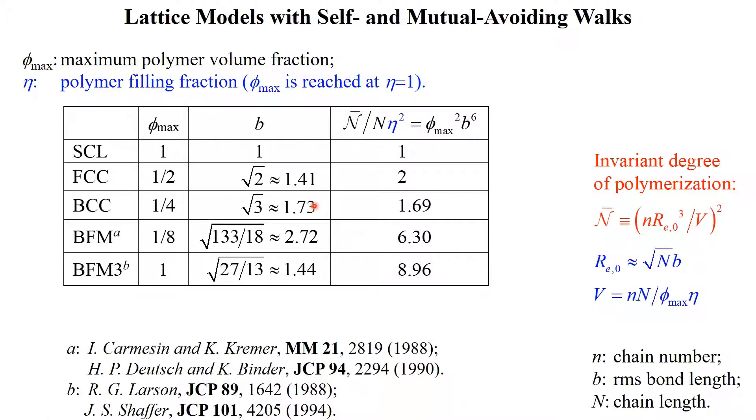Monte Carlo simulations using self and mutual avoiding walks on a lattice can be used to study both the thermodynamics and dynamics of block copolymer self-assembly. Due to the short chain lengths limited by computational cost, however, n-bar in such simulations have rarely exceeded 100. This table lists some lattice models commonly used in the literature, where phi-max and eta are the maximum polymer volume fraction and actual polymer filling fraction, respectively, on the lattice.